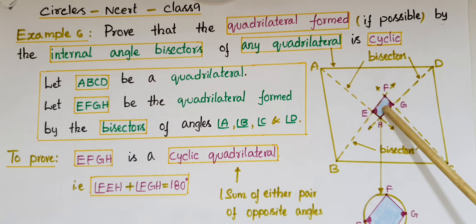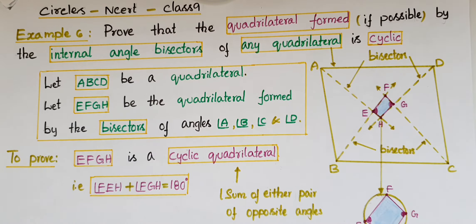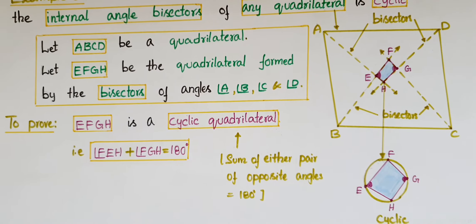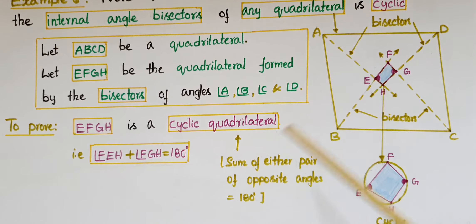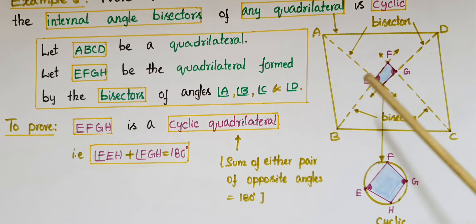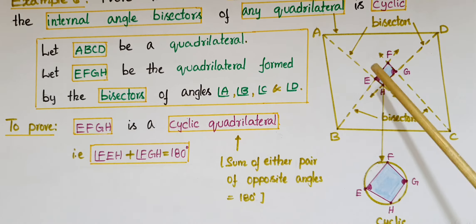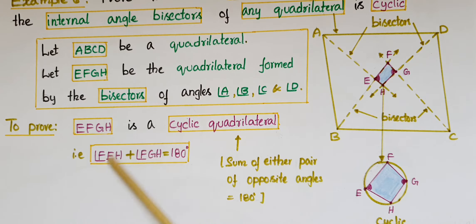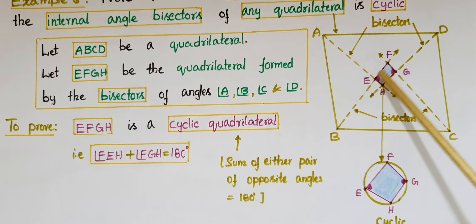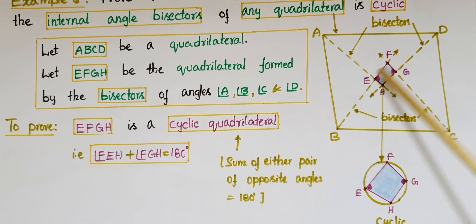We know that a cyclic quadrilateral means all the vertices should lie on a circle. So here we have to prove that EFGH is a cyclic quadrilateral. To prove it is cyclic, you have to prove the sum of either pair of opposite angles is 180 degrees. So we need to prove angle FEH plus angle FGH equals 180 degrees, as these two angles are related to two triangles.